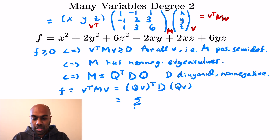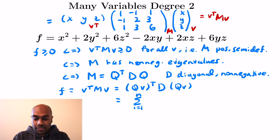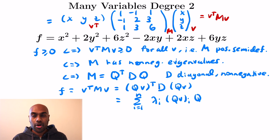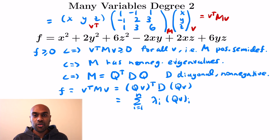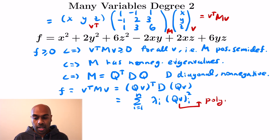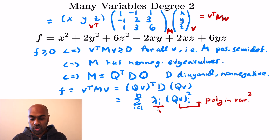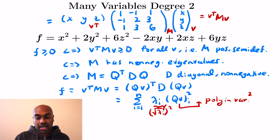If we expand this out, the expansion looks like the sum from i equals 1 to n of lambda i — the i-th diagonal entry of d — times the i-th component of the product qv, times itself. This can be rewritten as the sum of lambda i times the i-th component of qv, all squared. Now qv is a matrix of constants times the vector v of variables, so it's a linear polynomial in our variables — all squared. The lambda i's are non-negative so we can write them as the square root of lambda i, all squared, and absorb that into qv to get that this is actually a sum of squares of polynomials.